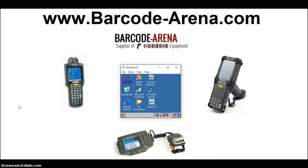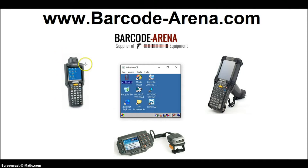Welcome back to the Barcode Arena YouTube channel. Today's video is about connecting Windows CE 5.0 onto your Wi-Fi network. Windows CE 5.0 comes on the 9090G series, the WT4090 wearable series, and the MC3090 series in handheld gun style. So if you're running Windows CE 5.0 and you need to connect to Wi-Fi, this video applies to you. We'll knock this out as quick as we can, as always.